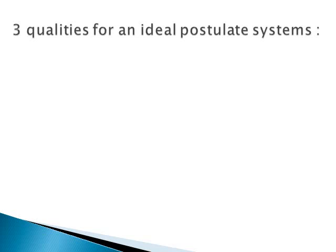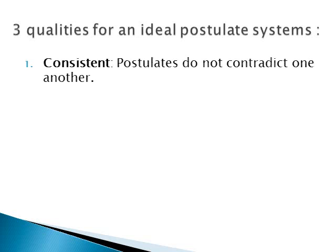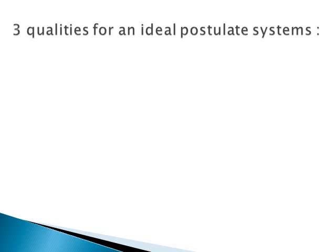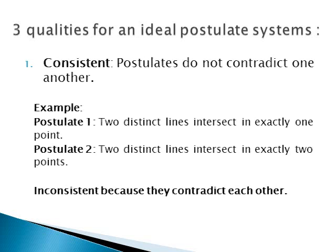Three qualities for an ideal postulate system: first, we're going to talk about a postulate system being consistent. When we give you a group of postulates, they need to be consistent — they don't contradict one another. Here's an example of inconsistency: Postulate 1 says two distinct lines intersect in exactly one point. Postulate 2 says two distinct lines intersect in exactly two points. It's inconsistent because they contradict each other, so we need our systems to be consistent.